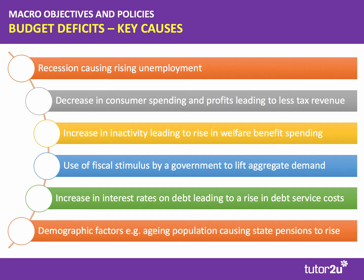The deficit may also go up for a deliberate reason when the government decides to inject a fiscal stimulus into the economy, either through an increase in public sector pay, an increase in investment spending, or even a fall in direct tax. There will be a short-term increase in the fiscal deficit because of a fiscal stimulus. The deficit might also go up if the government ends up paying more interest on its debt — typically the UK government spends between 40 and 45 billion pounds a year on debt interest. If the yield on government bonds goes up, the debt service cost rises, adding to the fiscal deficit.